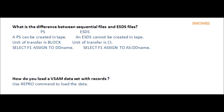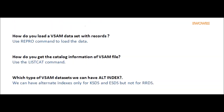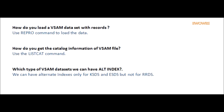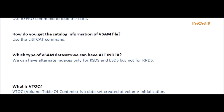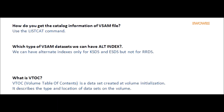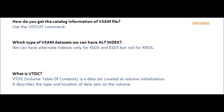Question: How do you load the VSAM data set with records? Answer: REPRO command is used to load the data. Question: How do you get the catalog information of a VSAM file? Answer: LISTCAT command is used to get the catalog information of a VSAM data set.